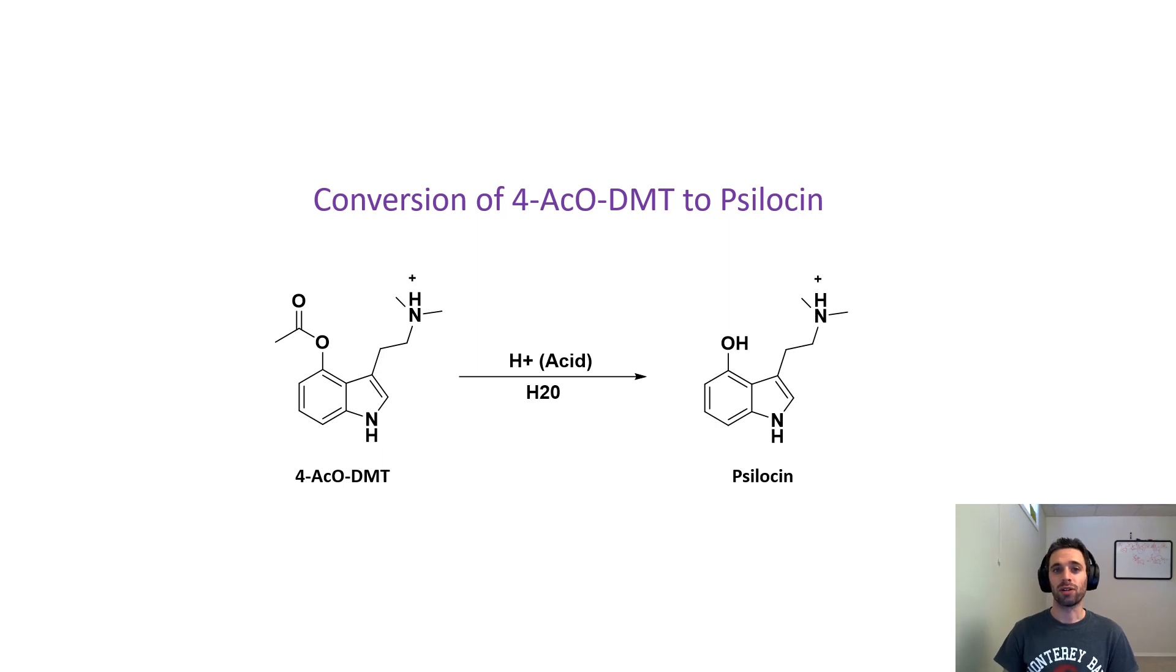In this video I want to talk about the biochemical mechanism under which 4-AcO-DMT gets converted to psilocin. Inside your stomach you have water and acid, and these two reagents aid in the conversion of 4-AcO-DMT to psilocin inside your stomach.